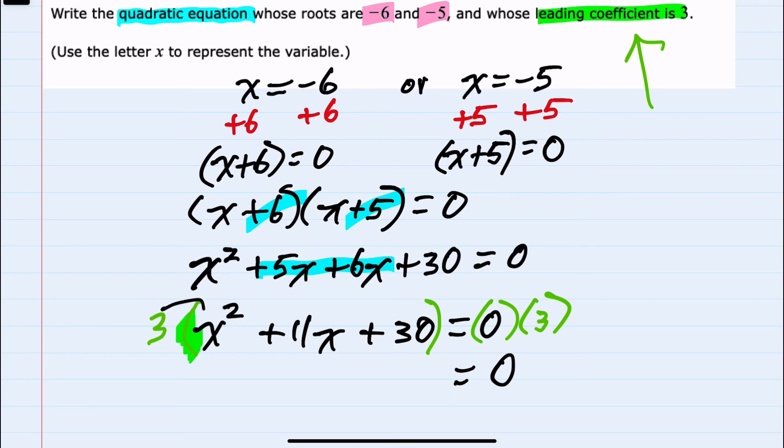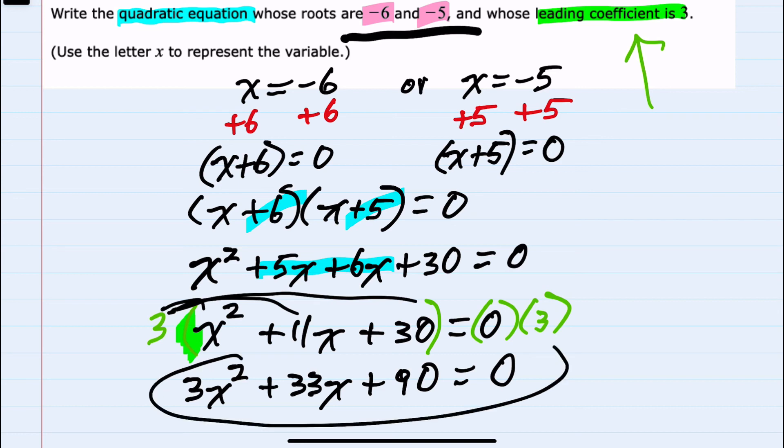On the left-hand side I just have to distribute that 3 giving me 3x squared plus 33x plus 90 equals 0. This will give us the roots of negative 6 and negative 5 and has the leading coefficient of 3.